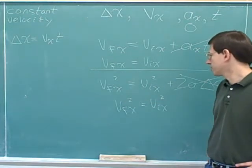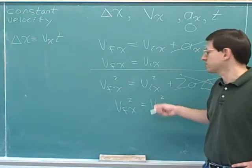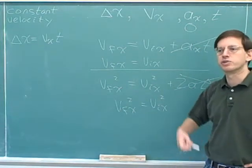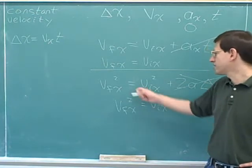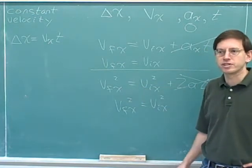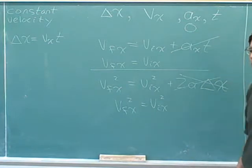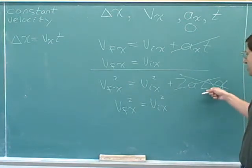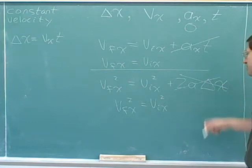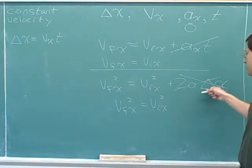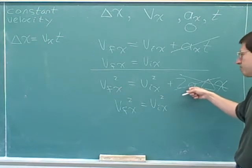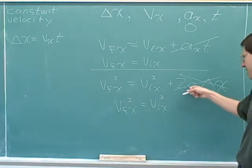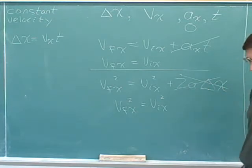We know that V final squared equals V initial squared because V final equals V initial. So this is just telling us that the final velocity is going to equal the initial velocity, which we already knew anyway. This is another equation that wouldn't really be very helpful for constant velocity. You might have expected to use this equation to find the displacement, but it isn't helpful because the displacement term is just going to drop out because it's going to be multiplied by zero.